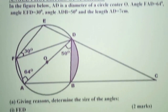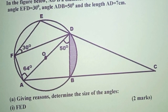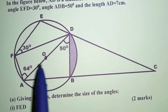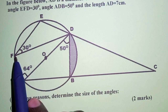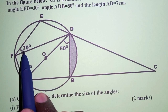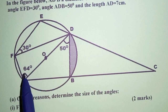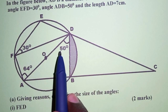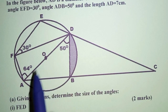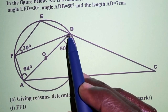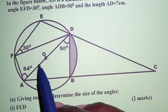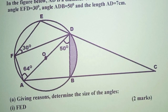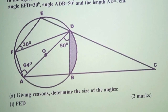We have the diagram just as described. We have angle 30, 64, and 50 just as explained, and then AD, which is the diameter, is 7 centimeters in length.